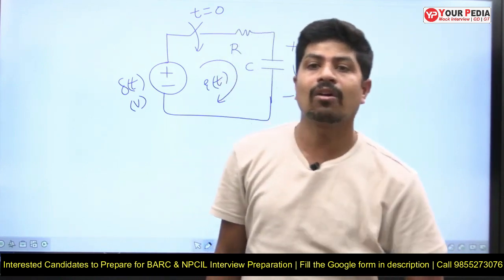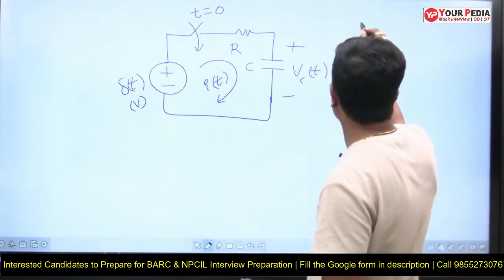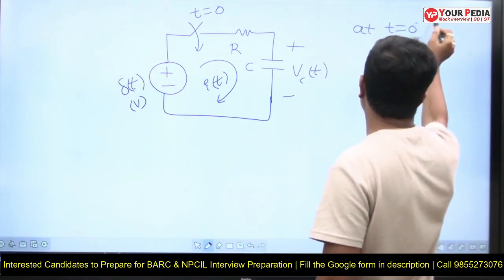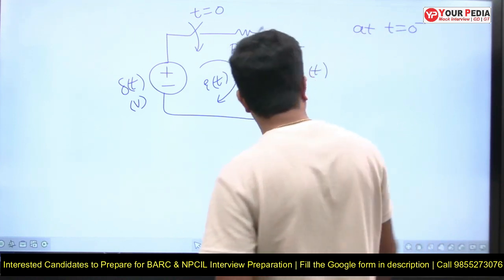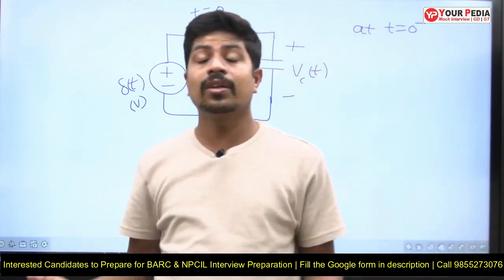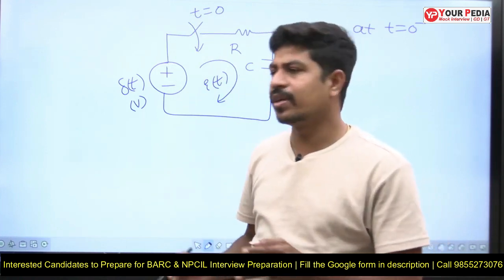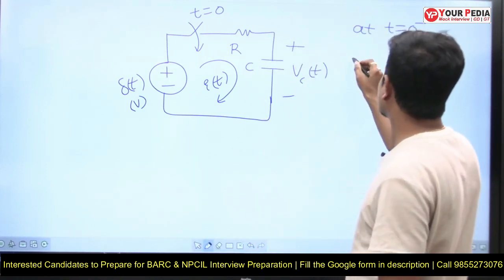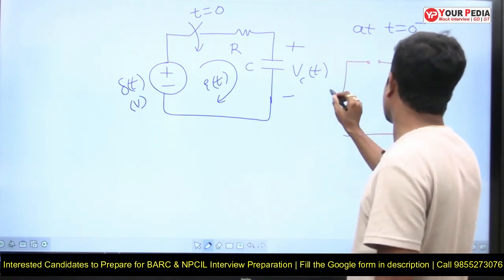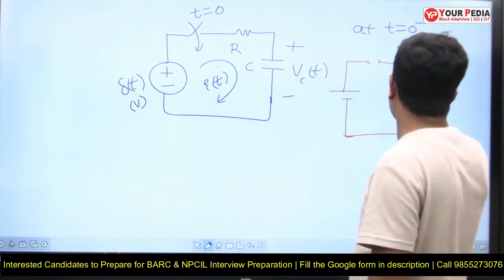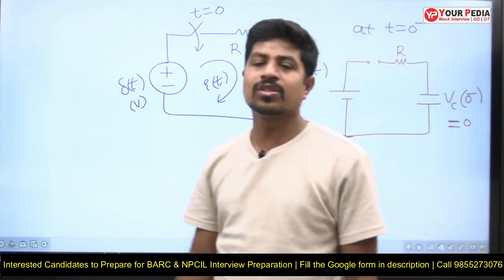But here, the capacitor will allow a sudden change in voltage because the input is delta of t. Let me draw the circuit conditions at t equal to zero minus, t equal to zero, and t equal to zero plus. At t equal to zero minus, the switch is not closed and there is no initial voltage across the capacitor — even if an initial voltage were there, there is no closed path. So VC of zero minus equals zero. No energy; switch is open.